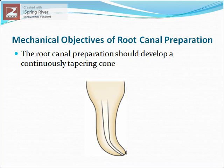The mechanical objectives of root canal preparation state that the root canal should develop a continuously tapering cone. The prepared canal should have a funnel shape, with the smallest diameter at the apex, and the diameter of the canal should increase gradually in the coronal direction.